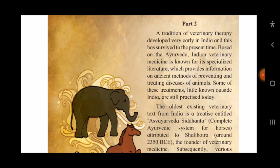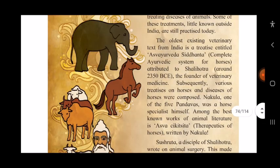The oldest existing veterinary text from India is a treatise entitled 'Asvarayurveda Siddhanta' — a book containing the complete Ayurvedic system for horses, covering what medicines and treatments should be used. This is attributed to Shalihotra, meaning considered to be written by Shalihotra, around 2350 BCE, the founder of veterinary medicine. Subsequently, various treatises on horses and their diseases were composed.